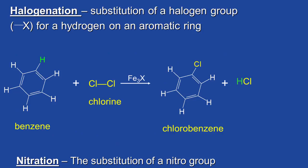Here we start off with benzene in a halogenation reaction. We usually have an iron(III) halide catalyst — that might be iron(III) chloride or iron(III) bromide — functioning as a catalyst. What's going to happen is one of these chlorine atoms will replace a hydrogen atom on the benzene ring, and the hydrogen that is lost will combine with the other chlorine atom. We end up with chlorobenzene — one chlorine atom has replaced a hydrogen atom on the aromatic ring, and the benzene ring itself remains intact.